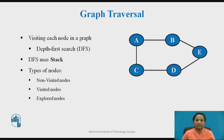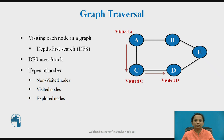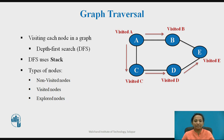What is Graph Traversal? Graph Traversal is the process of visiting each node in the graph, as shown here. This process is classified based on the order in which nodes are visited while traversing the graph. There are two standard methods: the first is Breadth-First Search, which we have already discussed in a previous video lecture, and the second method is Depth-First Search.